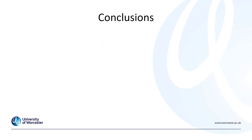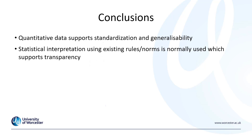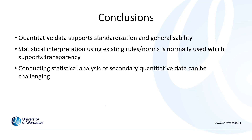In conclusion, quantitative data supports generalizability and standardization. Statistical interpretation normally uses existing statistical rules and norms, which helps to support transparency — however, an element of interpretation is still used within these existing rules and norms. Conducting statistical analysis of secondary quantitative data can be challenging, so make sure you give thought to how you can create something new if using secondary quantitative data, and whether you can break down the data enough to conduct a good level of inferential analysis.